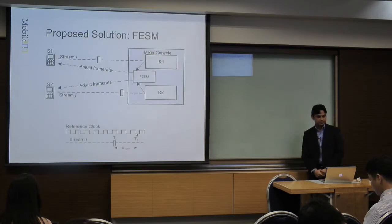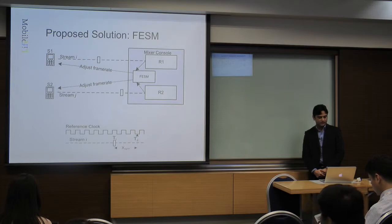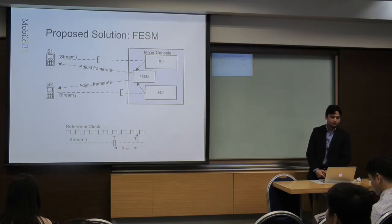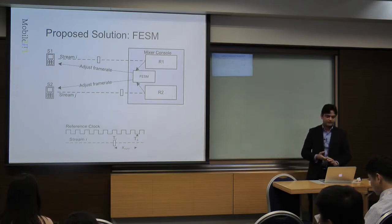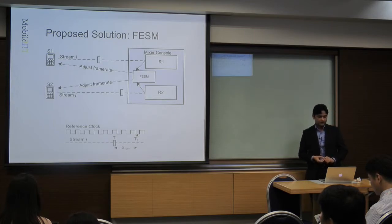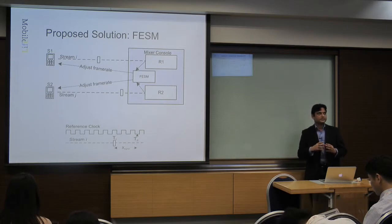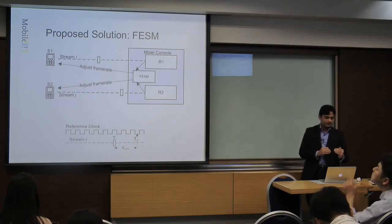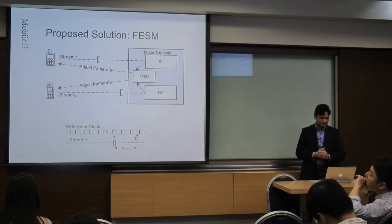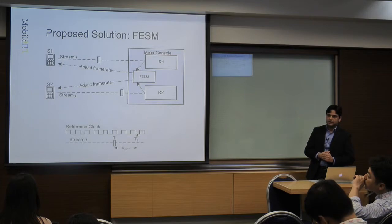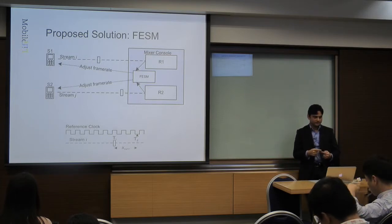This is how our solution looks. We consider two video sources which send separate streams to receivers at the mixer console. There is a block called FASM — Frame Rate Expression Synchronization Manager. It reads timestamps from each stream and then tries to synchronize that stream by adjusting its frame rate with the reference clock sitting in the mixer console. The reference clock is synchronized with all devices using, for example, NTP. When all the streams are synchronized to one single reference clock, automatically they are synchronized with each other.